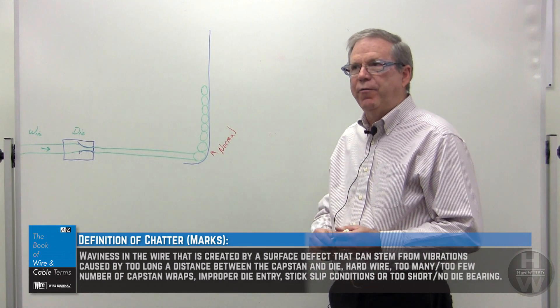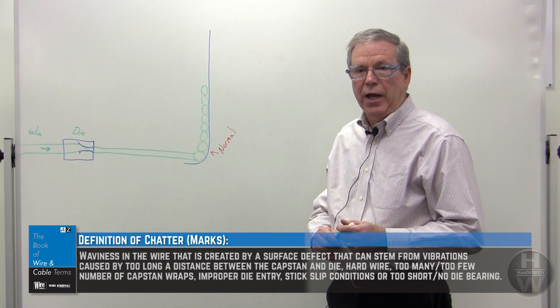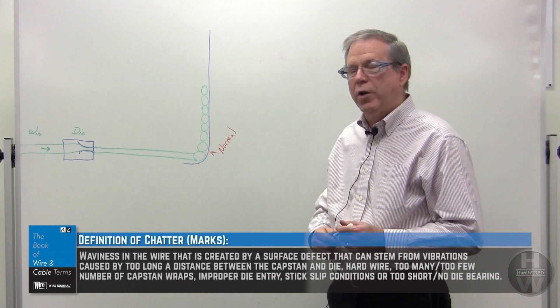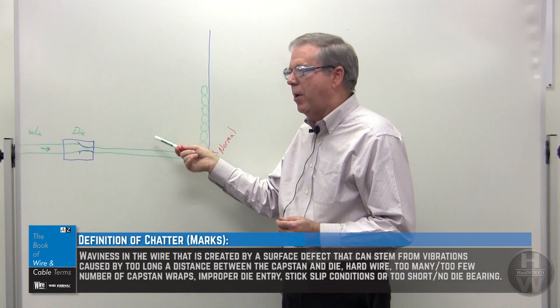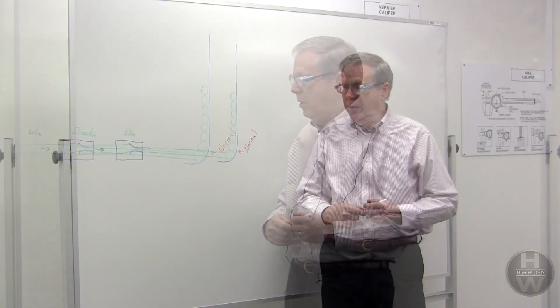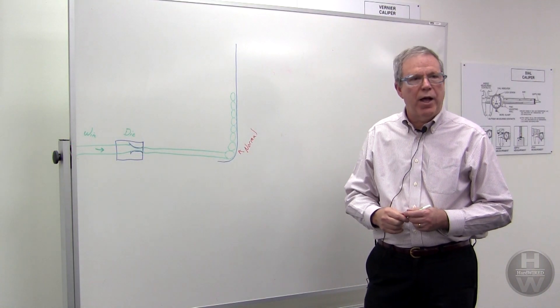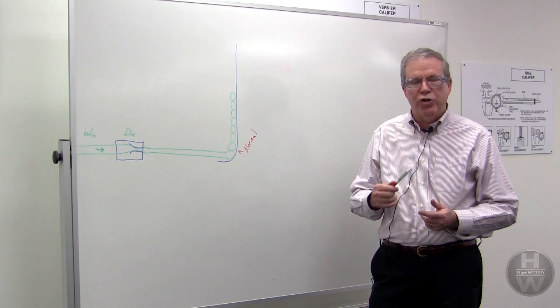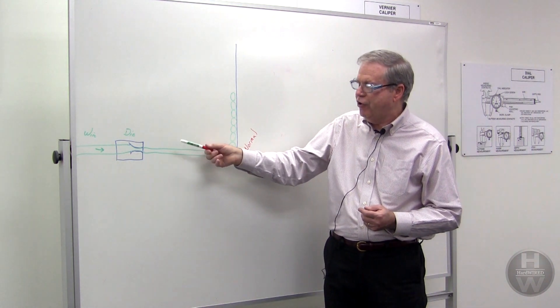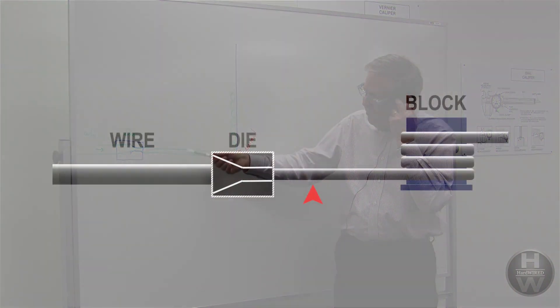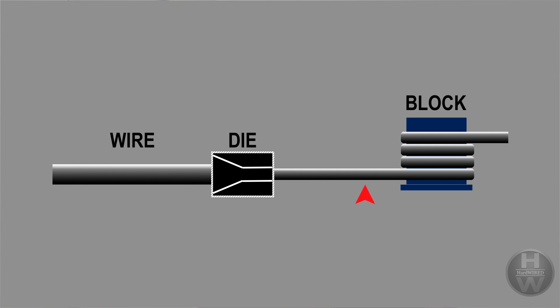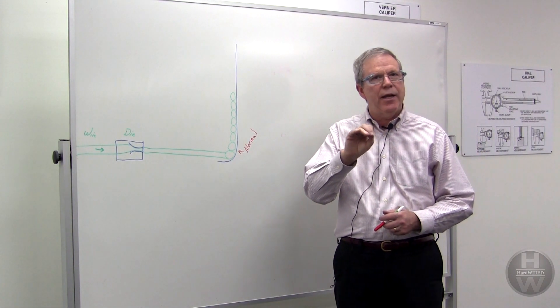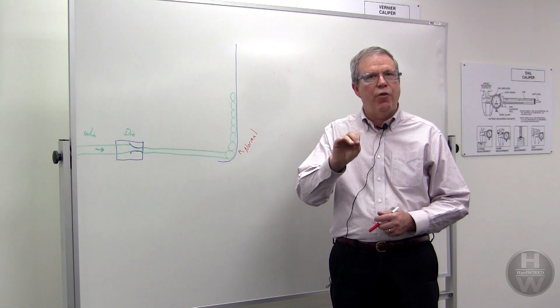You usually don't see it on the first blocks because the wire speed is slow enough that you have not reached that harmonic point yet. But as you move down the blocks with higher speed, you'll reach a point where that harmonic vibration starts and that wire will start to vibrate, creating a systematic pattern on the wire.